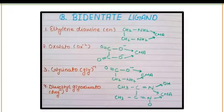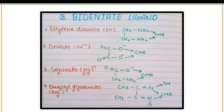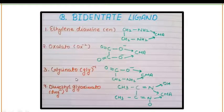The second type of ligand is bidentate ligand. Bidentate means these ligands have a denticity of two. A bidentate ligand has two teeth or atoms that coordinate directly to the central atom in a complex. There are four examples of bidentate ligands: number one is ethylenediamine, number two is oxalato, number three is glycinato, and number four is dimethylglyoximato, also known as DMG.